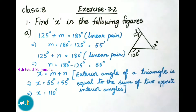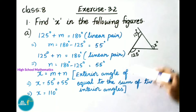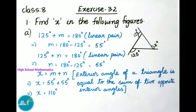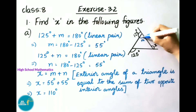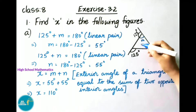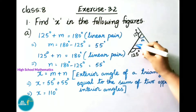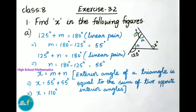The given figure is a triangle. Here they have given exterior angles: x, 125 degrees, and 125 degrees. Now we have to find the x value. Let us take for this 125 a linear pair angle M, and for this 125 degrees another linear pair angle N.